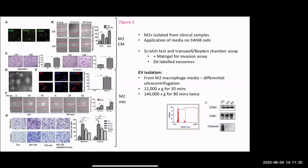Now moving to the exosomes. They isolated EVs from the M2 macrophage media using differential ultracentrifugation: 12,000 × g for 30 minutes, then 140,000 × g for 80 minutes, done twice. They use the term 'exosomes' - I'm aware that's not necessarily the most accurate term, so I'll use it as they do in the paper but what they're really characterising is small EVs. One red flag I noticed is that their methods mention either differential ultracentrifugation or a total exosome isolation reagent, and it's really unclear why they use different methods for different experiments.